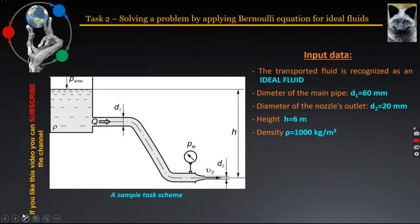On the left on the slide is presented the sample scheme of the task, and on the right is given the input data — the information provided in advance. A fluid transport system is presented where the transported cold water is specified to be considered as an ideal fluid. The water is transported from an open tank to a pipeline with a diameter D1 equal to 60 mm. At the end of the pipeline, a nozzle is mounted with a narrowing of the cross section whose diameter is D2 equal to 20 mm. Just before the nozzle, a manometer is installed to measure the manometric pressure PM at the connection or joint point. The distance measured in a vertical direction from the water level in the tank to the outlet of the nozzle is h equal to 6 meters.